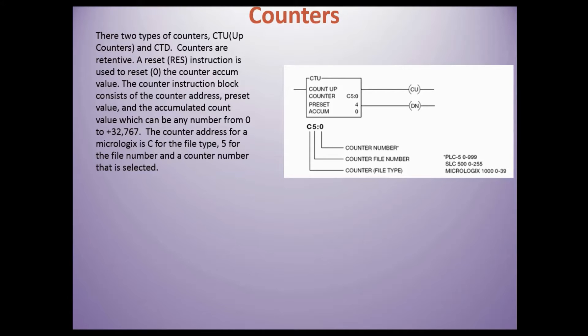And you have your cumulative count which can be any number from zero to 32,767. The counter address for a MicroLogix is C for the file type, 5 for the file number, and a counter number that is selected.